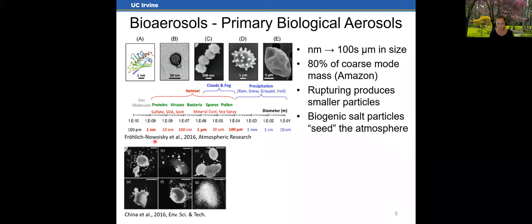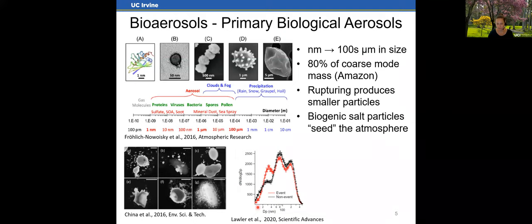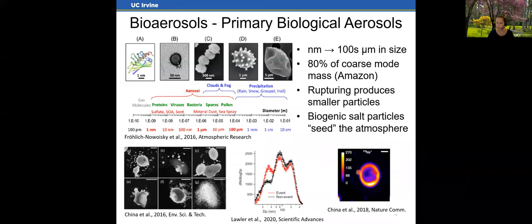This rupturing effect is illustrated in a size distribution figure showing a rupturing event in red compared to a background distribution. The x-axis is particle diameter and the y-axis is dN/d log Dp, essentially the number of particles at different sizes. During a rupturing event, there's a clear elevated peak around 30 nanometers, showing that ruptured particles can be quite small. Additionally, these primary biological aerosols can contain biogenic salts — this is important because salts are really effective at seeding the atmosphere, producing clouds, and potentially contributing to precipitation.